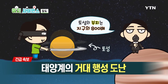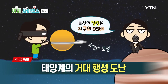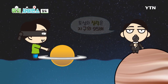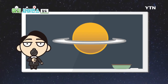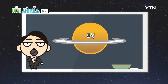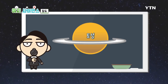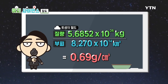부피는 무려 지구의 약 800배! 그나마 질량도 약 95배 큰 행성인 토성을 물에 던졌더니, 물에 동동 떠 있습니다. 비밀은 바로 밀도 때문인데요. 수소와 헬륨 등 가벼운 기체로 이루어진 토성의 밀도는 심지어 1보다 작은 0.69g/cm³으로, 태양계의 모든 행성 중 밀도가 가장 작은 것으로 알려져 있습니다. 이 때문에 엄청난 크기의 토성이 스티로폼처럼 물에 뜰 수 있었던 것입니다.